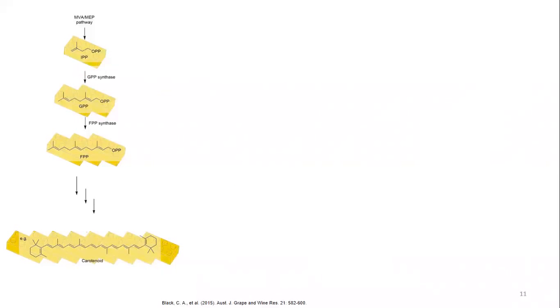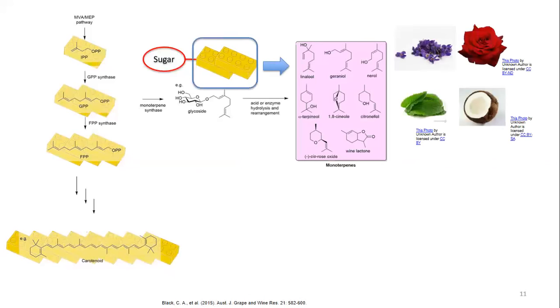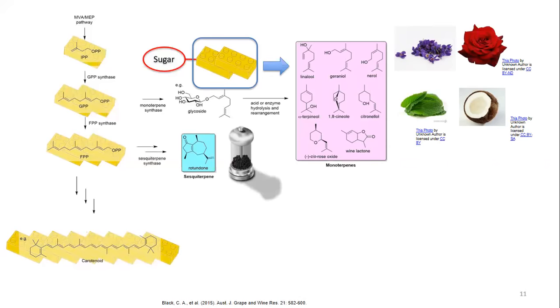For those who don't like chemistry, I've put some Lego bricks behind the structures so you can look at the building blocks. This pathway is essentially what happens in grapes — building up from isoprene units all the way through to carotenoids, the 40-carbon units. Along the way: one block of five carbons, then two blocks of ten carbons, where cyclization, rearrangement, and binding to sugar give us sugar-bound monoterpenes — quite a dominant varietal characteristic — and free monoterpenes like linalool, geranial, and nerol.